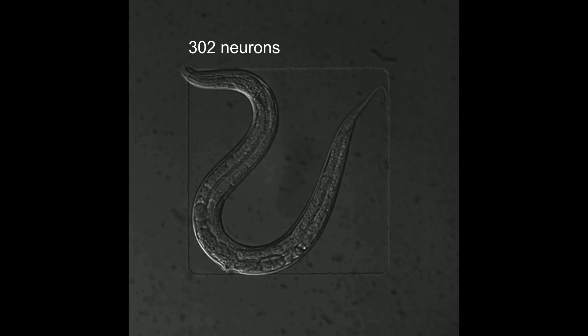In this study, we analyzed how RIS is activated by studying its molecular content. We found that following cellular stress, epidermal growth factor receptor signaling activates RIS directly and through a drowsiness neuron.